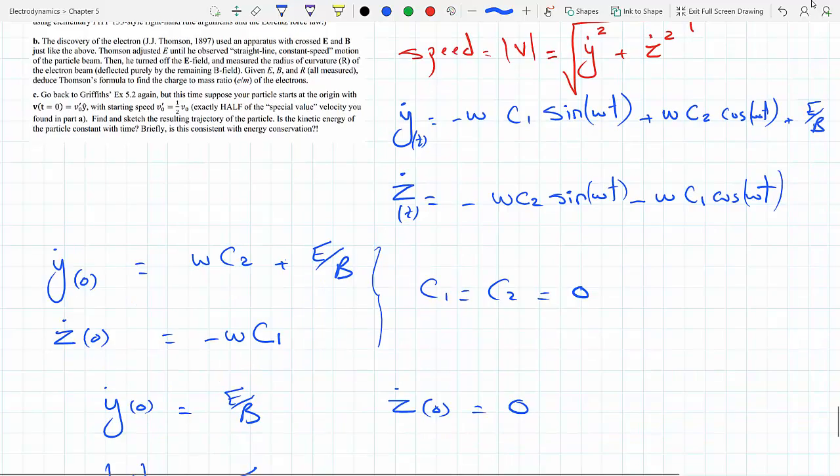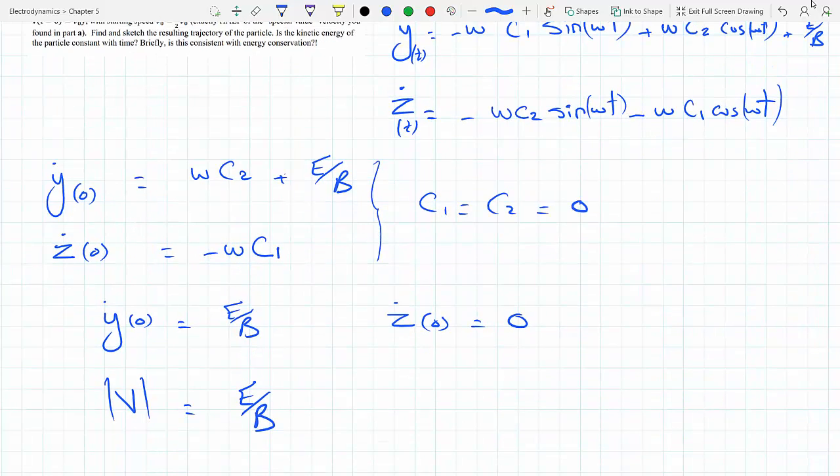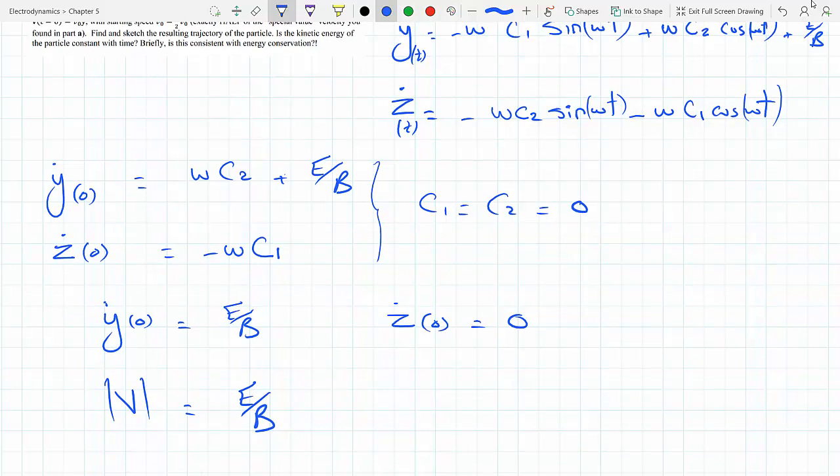So this is the special initial speed. And notice that this came from y dot, from dy over dt, which means you would have to have the initial velocity equal E over B in the y direction for this to happen. So you can get a speed of E over B upon which the sinusoidal terms in time go away and you get a straight line motion.